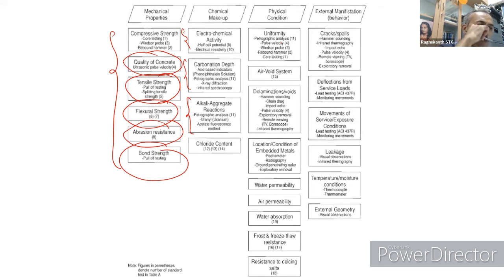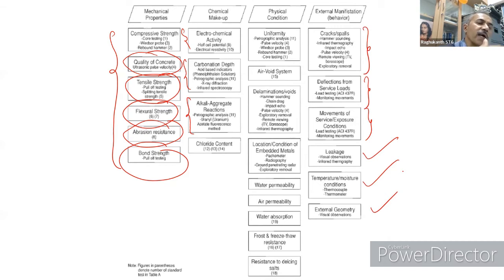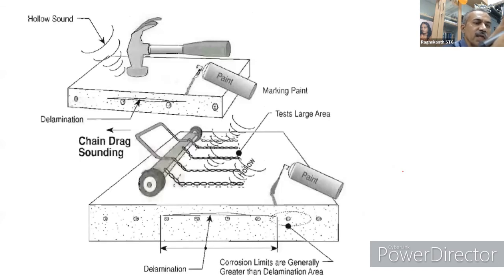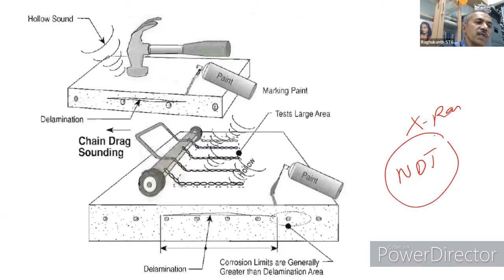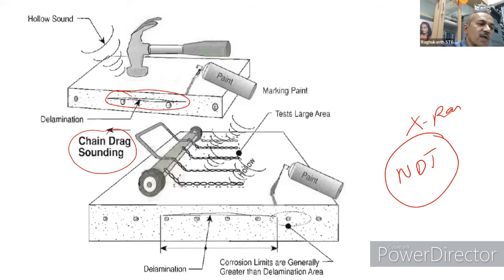Many non-destructive tests are inspired by medical diagnostics — MRI, CT scan, X-ray translated to concrete. The simple hammer test uses sound changes to identify internal cracks. Chain drag sounding identifies cracks by changes in sound as the chain is dragged. Half-cell potential testing measures corrosion: above 350 mV indicates highly likely corrosion; 200–350 mV means corrosion is uncertain.